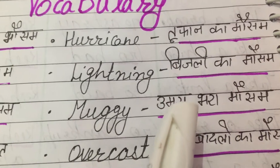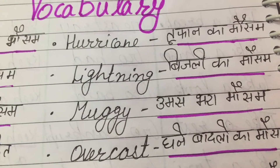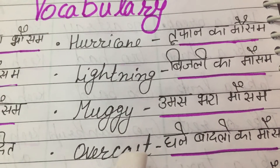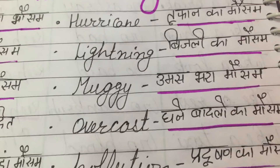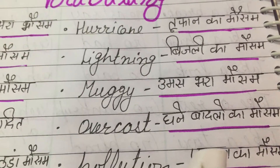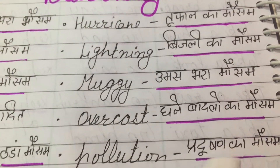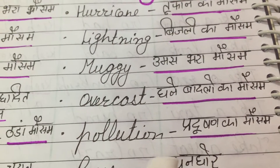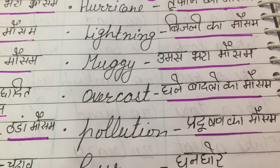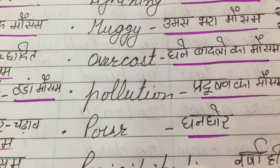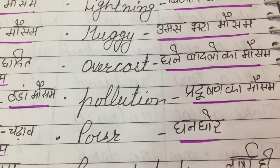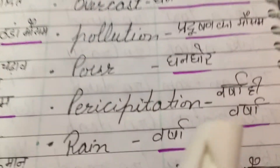Lightning means Bijli ka mousam. Muggy means Umasbara mousam. Overcast means Ghanay baadlo ka mousam. Pollution means Pardushan wala. Pour means Ghanagor wala mousam.